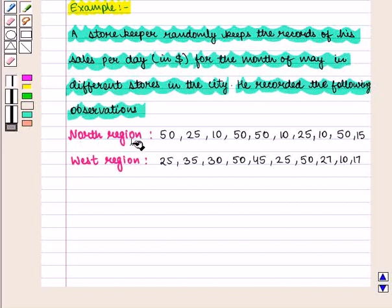In the north region, the sales are given as 50, 25, 10, 50, 50, 10, 25, 10, 50, and 15 dollars.